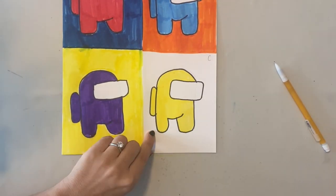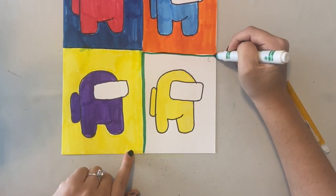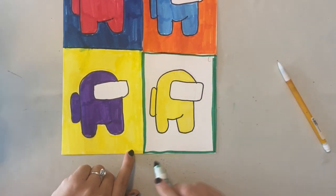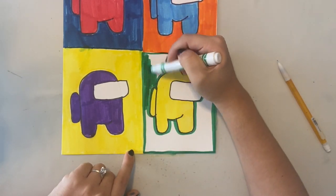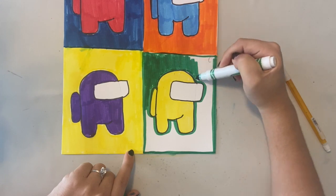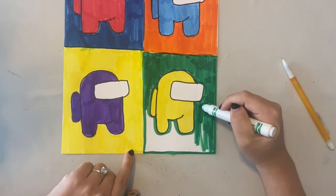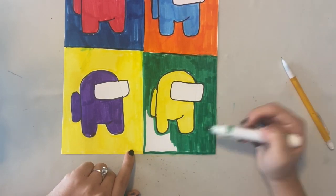And last, for my last Among Us character, it is yellow, which is a warm color. So I am using a cool color, like green, to color in my background, making sure I fill in the whole section and don't leave any white spots on my paper.